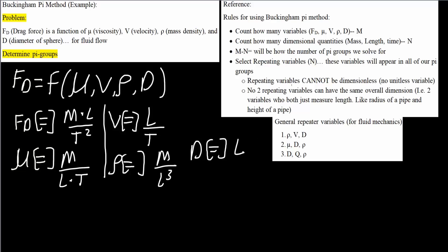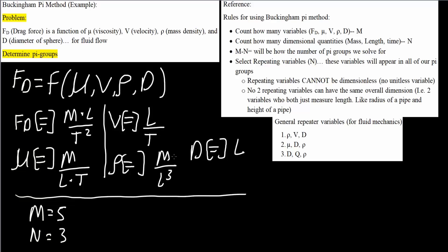Now let's apply the rules for using the Buckingham Pi method. First, count the number of variables M. We have drag force (1), viscosity (2), velocity (3), density (4), and diameter (5), so M = 5. Next, count the number of primary dimensions, which are mass, length, and time, so N = 3. The number of pi groups is M minus N: 5 minus 3 equals 2. So we will solve for 2 pi groups.